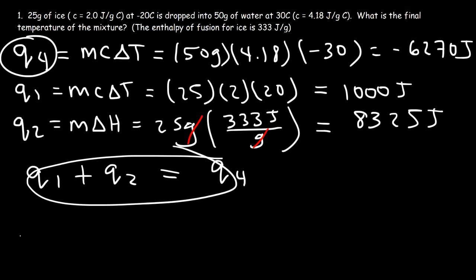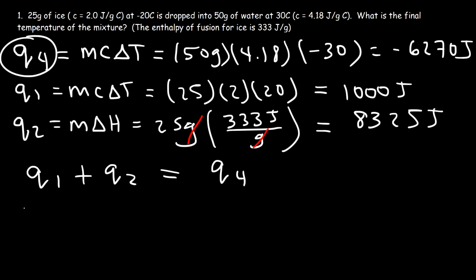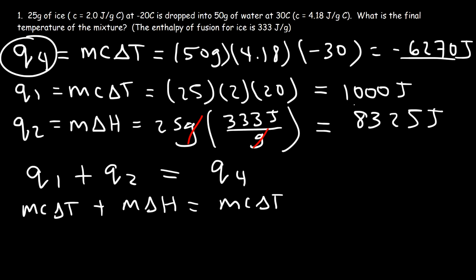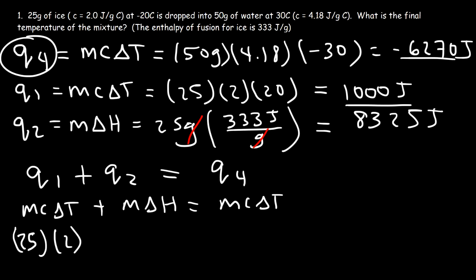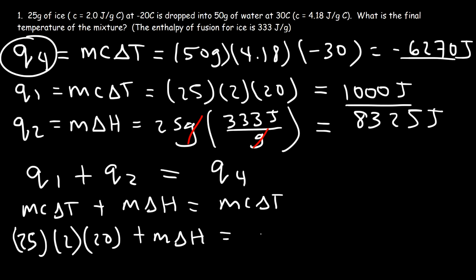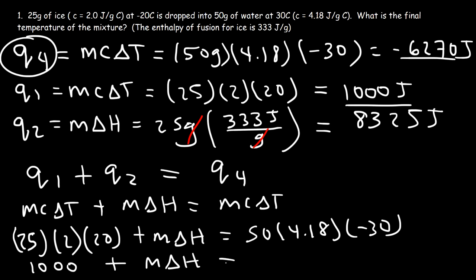This is how we set up the equation. Q1 is MC delta T, Q2 is M delta H, and Q4 is MC delta T. Plugging in: Q1 is 25 times 2 times 20, which is 1,000 again. Q4 is 50 times 4.18 times negative 30, which is negative 6,270. So Q1 plus Q2, which is M delta H, equals Q4, which is negative 6,270.